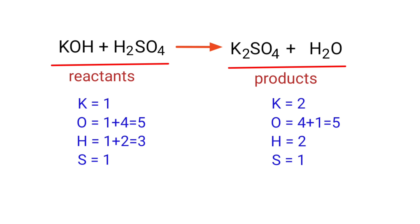In this equation, we need to balance the potassium atoms first. To do this, we need to put a coefficient of 2 in front of KOH.